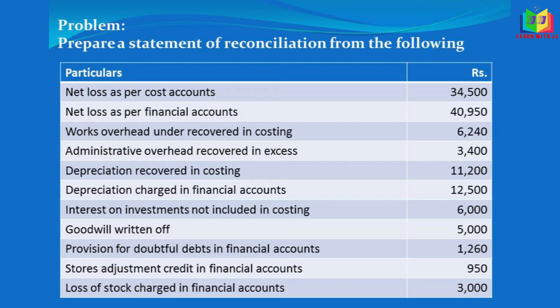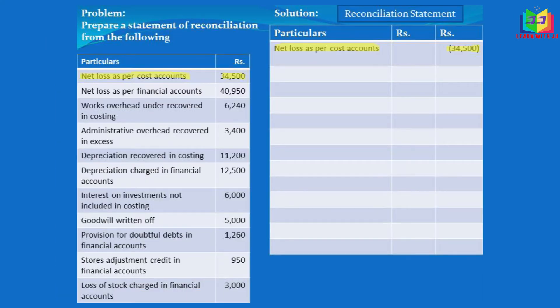If we start with the cost account loss, we will arrive at the financial accounting loss. If we start with the financial accounting loss, we will arrive at the cost accounting loss. The other things remain the same. Here we have a loss. The first step: I'll start with cost account, so the base is cost account. I'm going to write net loss as per cost account in brackets to highlight that it is a loss.